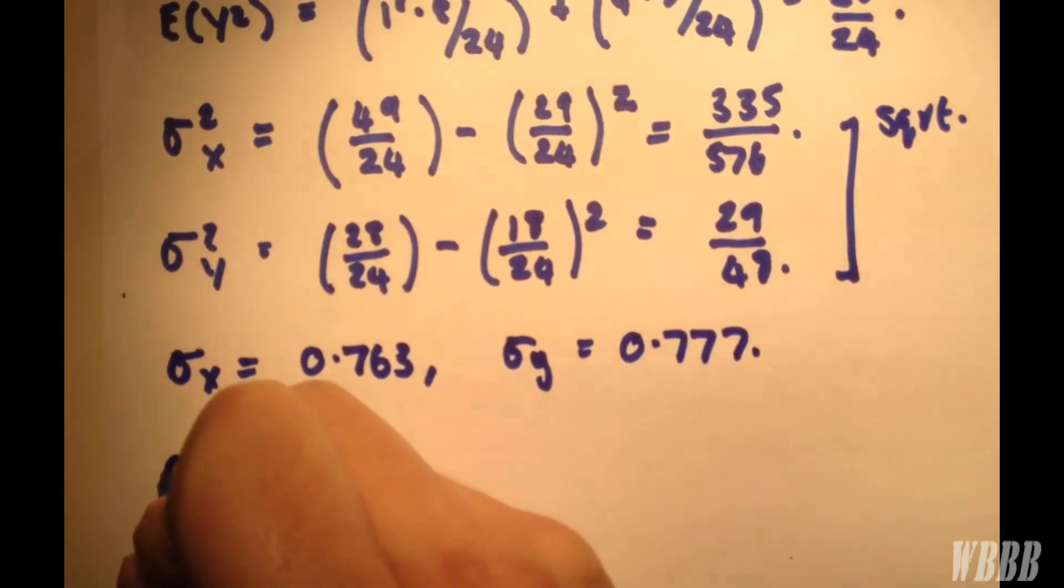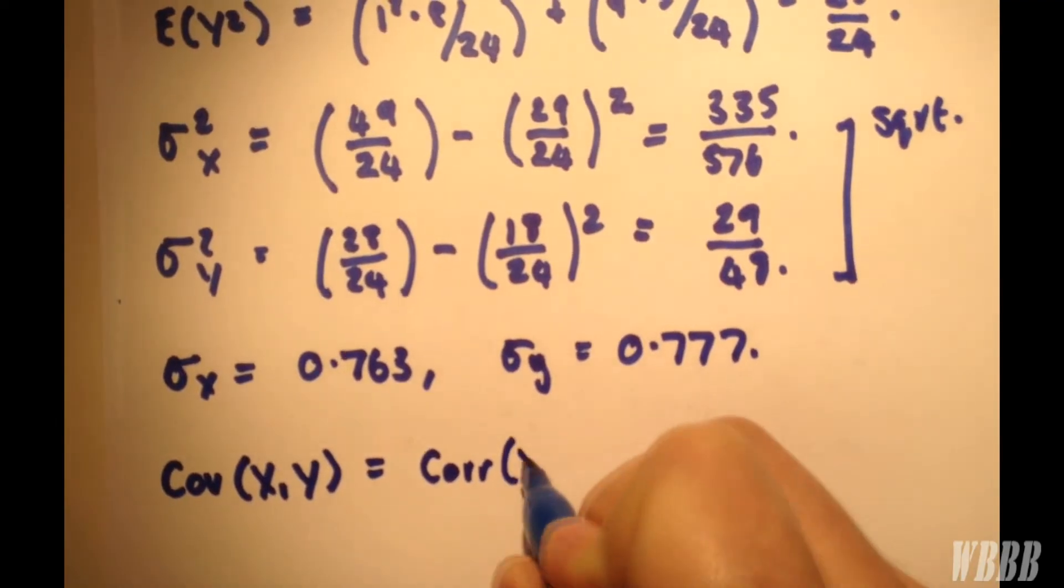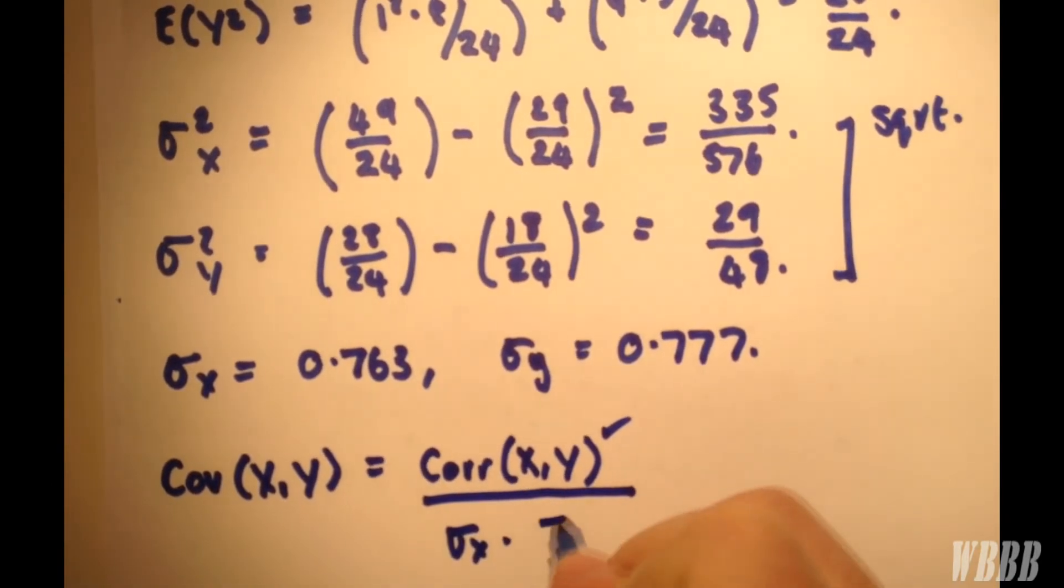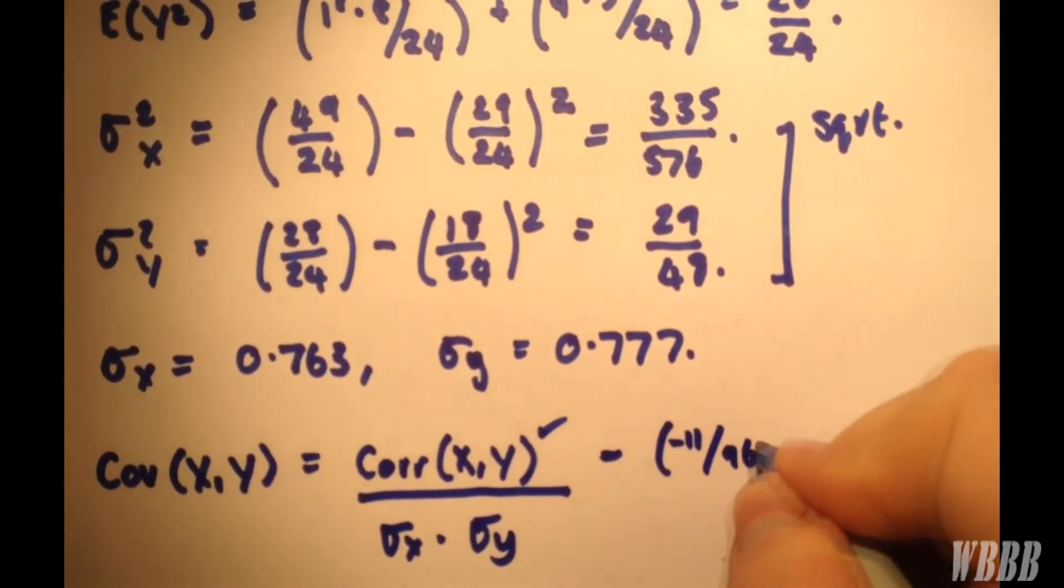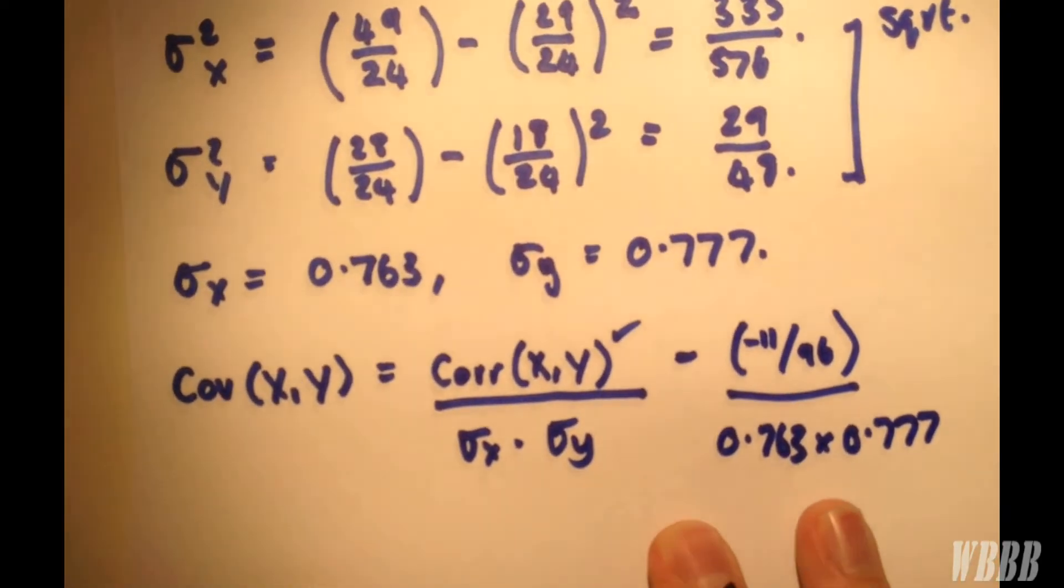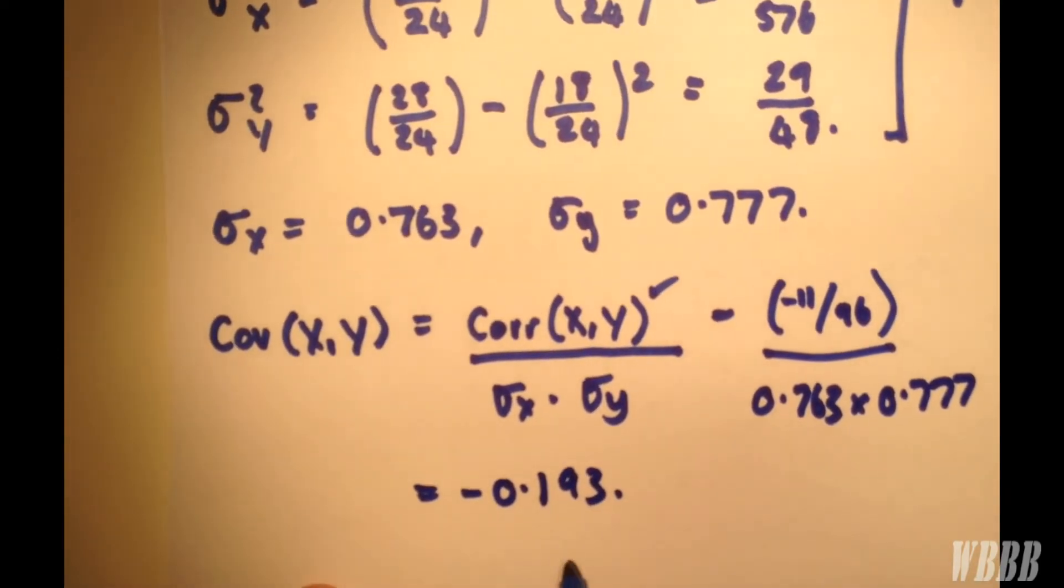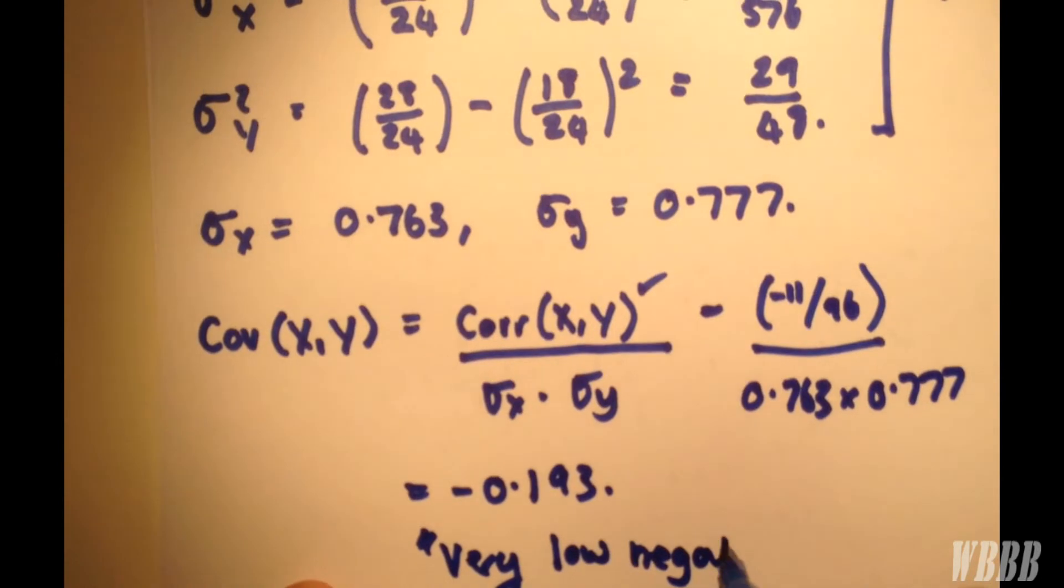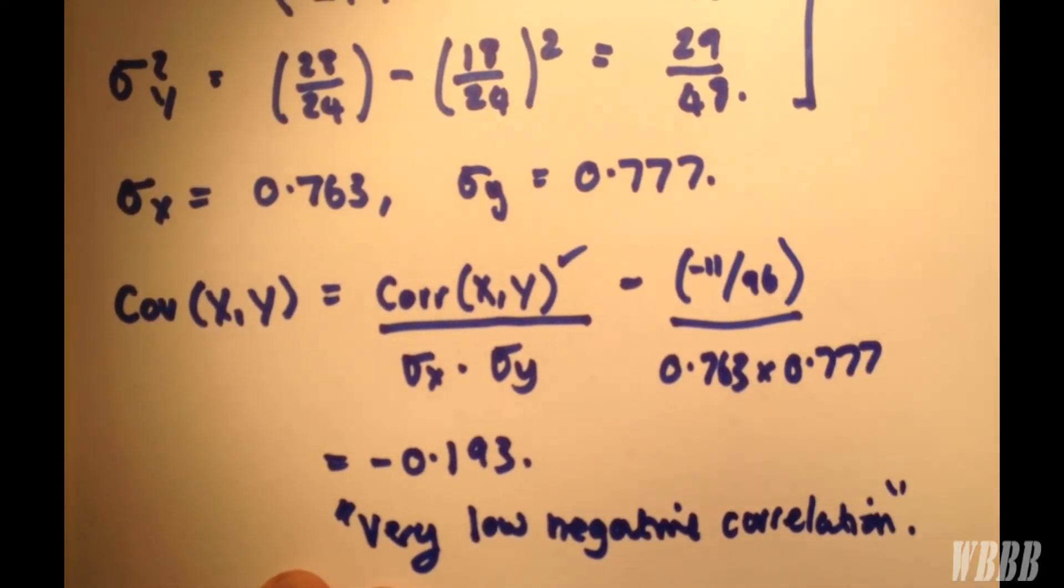And if we enter that into our covariance formula, we have correlation X, Y. And the standard deviation of X equals 0.763 times by 0.777. So our covariance is minus 0.193. So we can say it has a very low negative correlation. Thank you for watching.